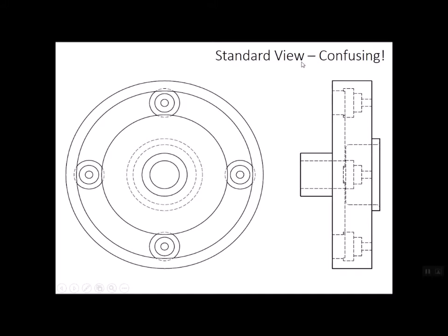So a standard view in multi-view drawing with visible lines, hidden lines, center marks, and center lines. These hidden lines are just a mess. So we're going to consider a different kind of view that shows the same information much more clearly. And this is a section view.